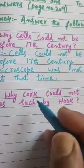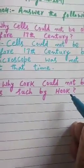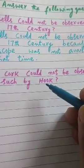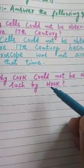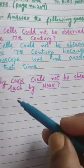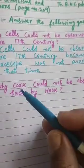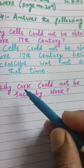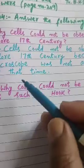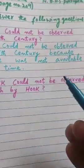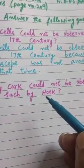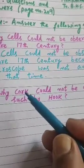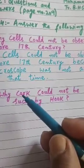Second part: why could cork not be observed as such by Hook? We know that Robert Hooke discovered the cell in 1665. The question asks why Robert Hooke did not observe the cork directly under the microscope — instead he observed a thin slice of cork under the microscope.